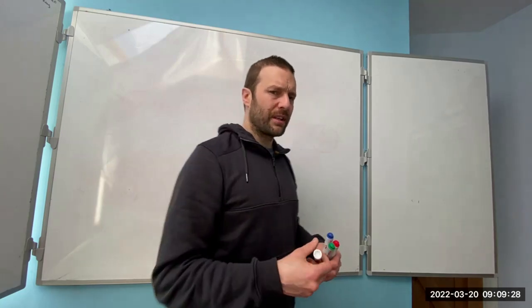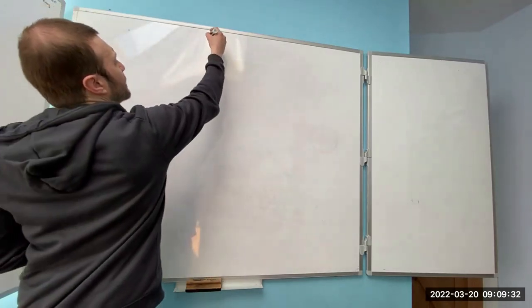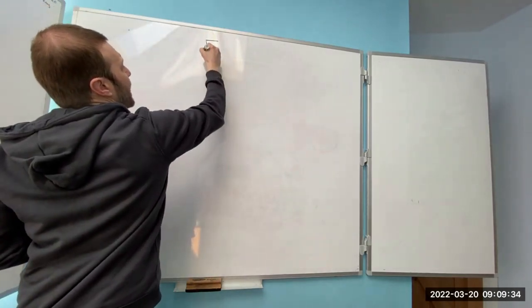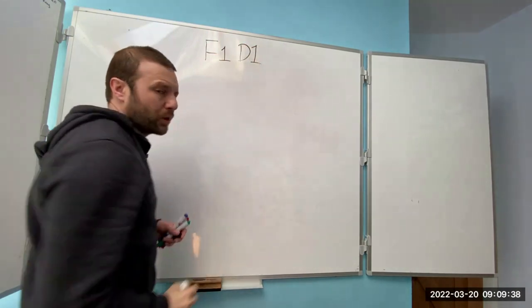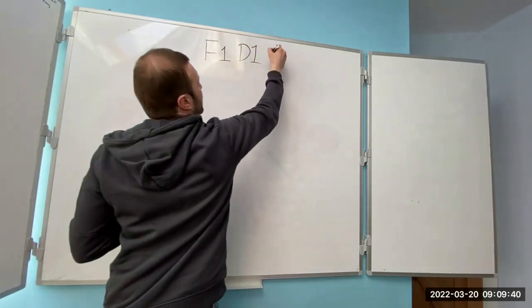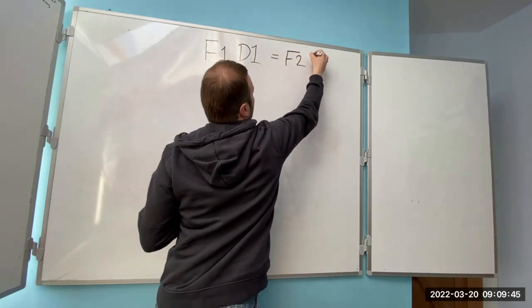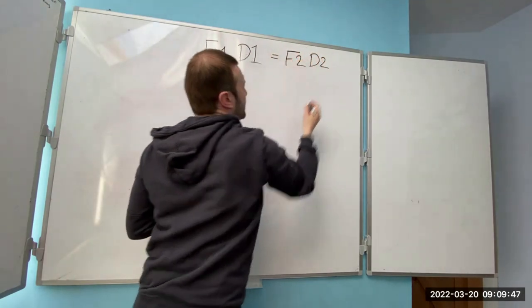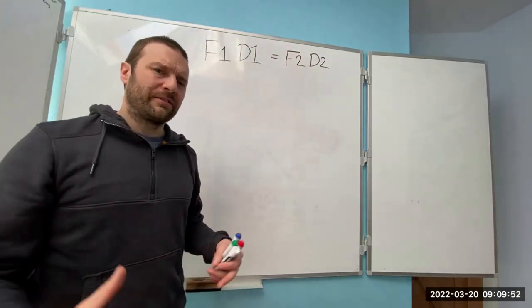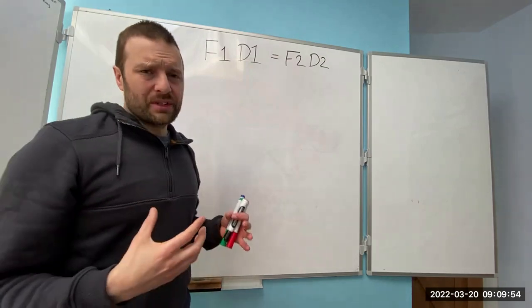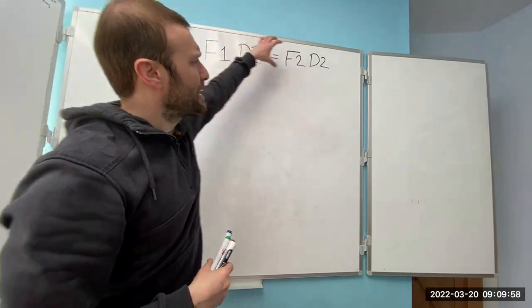The first thing I want you to think about is a very basic formula. The first formula is F1D1 equals F2D2. That formula is the formula for levers, and the reason I've chosen this formula first is it's a very easy formula to begin with because everything is on the top level.